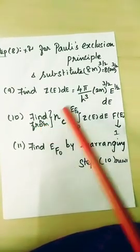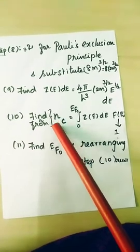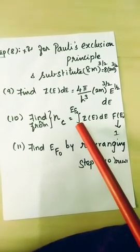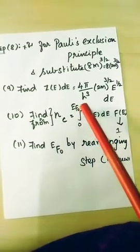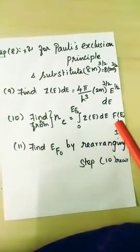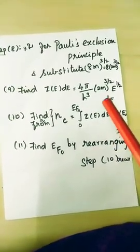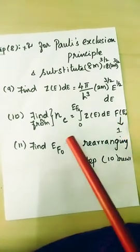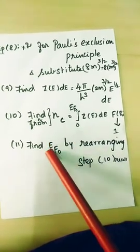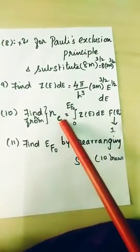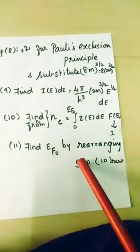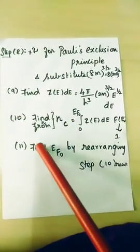Next, we have to find the carrier concentration Nc. Nc can be written as the integral of Z(E)dE × f(E) with limits 0 to Ef0. The value of f(E) will be 1 for this case, because of the position of the charge carrier. Then the next step is to find Ef0 from the equation of Nc — by rearranging the step 10 result — and finally we can get Ef0.